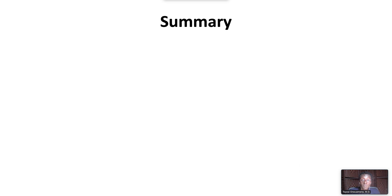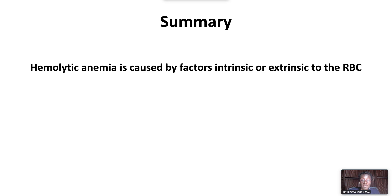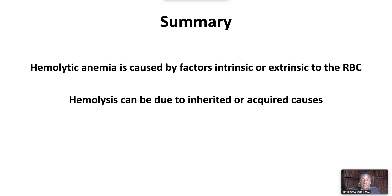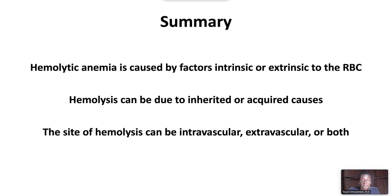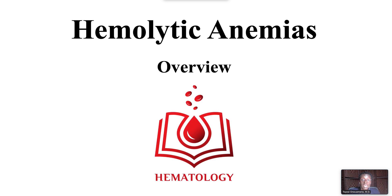In summary, hemolytic anemia is caused by factors intrinsic or extrinsic to the red blood cell. Hemolysis can be due to inherited or acquired causes. The site of hemolysis can be intravascular, extravascular, or both intravascular and extravascular. This ends our video on hemolytic anemia: a brief overview.